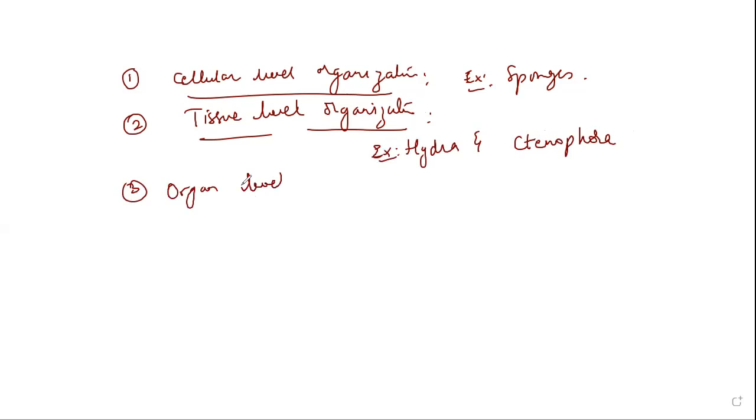The third type of organization is organ level organization. When two or more tissues are grouped together to form a structural and functional unit, it is called an organ. Example: platyhelminthes.